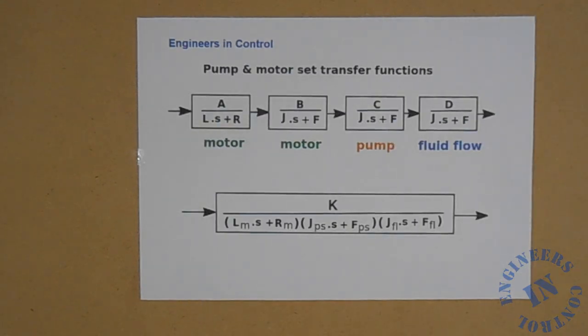So now bringing it all together into a single transfer function we end up with this. The total system gain K converts motor voltage into the fluid flow rate in cubic meters per hour. The system dynamic behavior through the characteristic polynomial is a third order polynomial in s as shown.